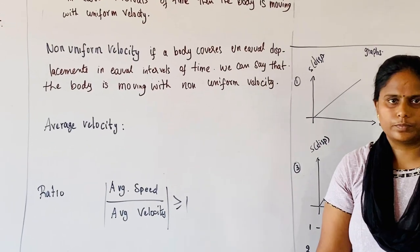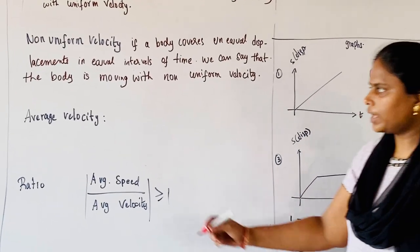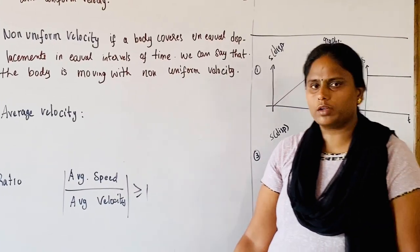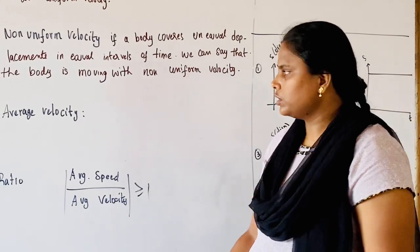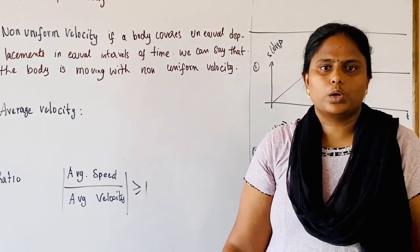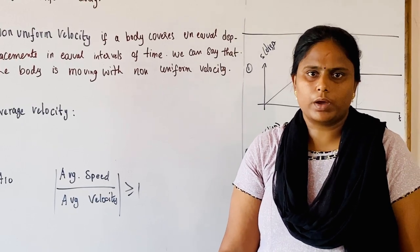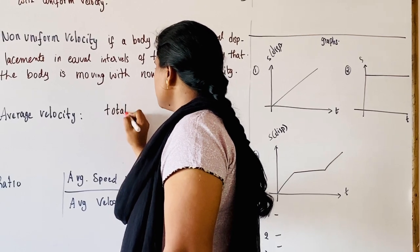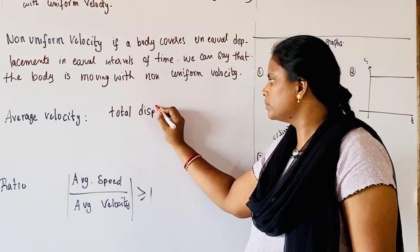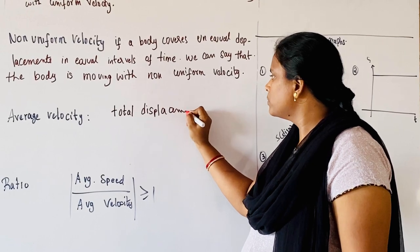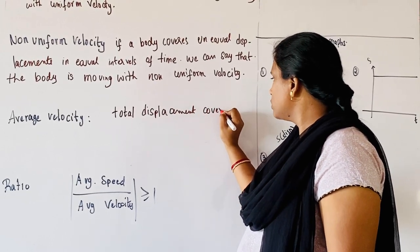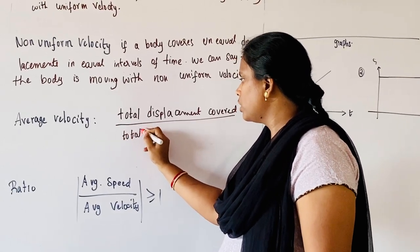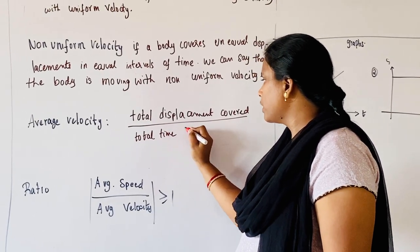Coming to average velocity. Whenever the body is moving with non-uniform velocity, then only we can observe the average velocity. Average velocity is nothing but the total displacement covered divided by the total time taken.